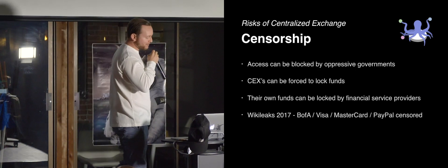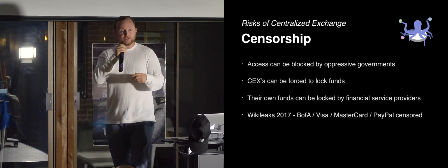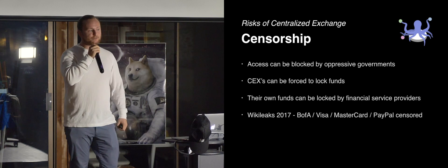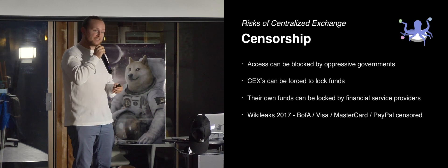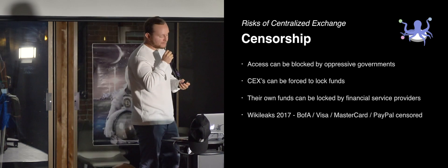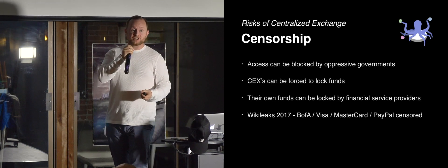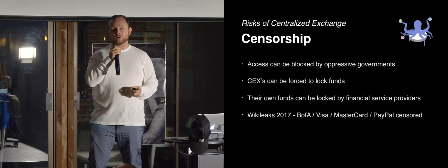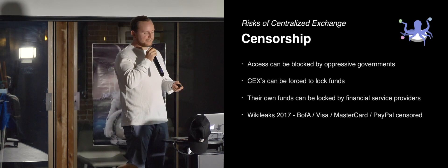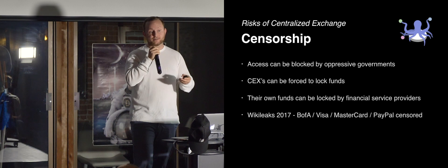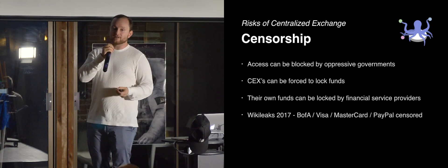The second risk is censorship. Because we have a centralized exchange, we also have a central point of failure — access to this exchange can be blocked. An oppressive government can force them to lock a specific user's funds, or the assets of that exchange can be locked by their financial service providers. When you put trust in a centralized exchange, you're not only trusting them, but you're also trusting all of the parties that they rely on as well.